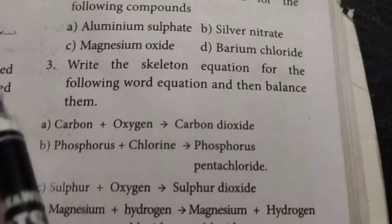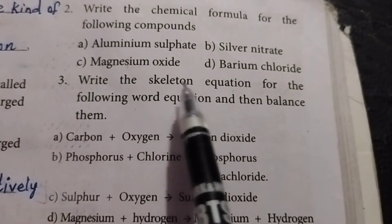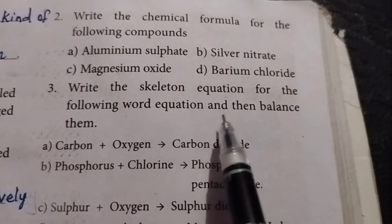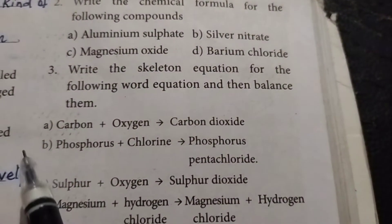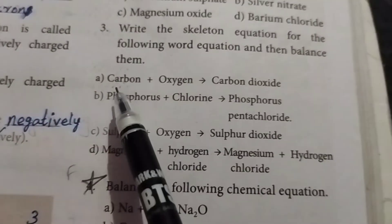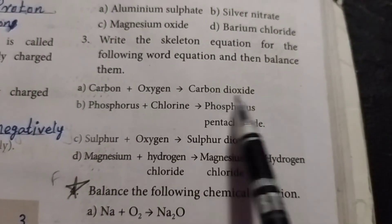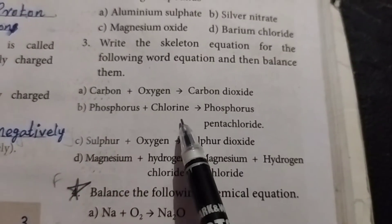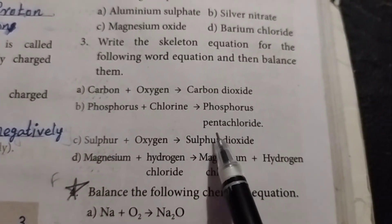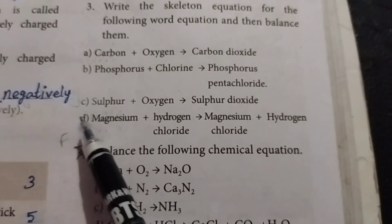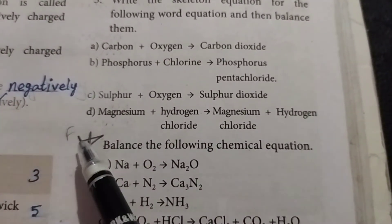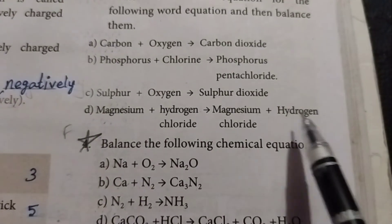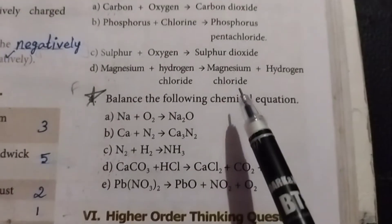Third one: write the skeleton equations for the following word equations and then balance them. Option A: carbon plus oxygen yields carbon dioxide. Option B: phosphorus plus chlorine yields phosphorus pentachloride. Option C: sulfur plus oxygen yields sulfur dioxide. Option D: magnesium plus hydrogen chloride yields magnesium chloride plus hydrogen.